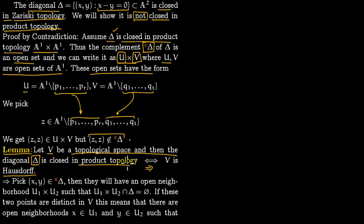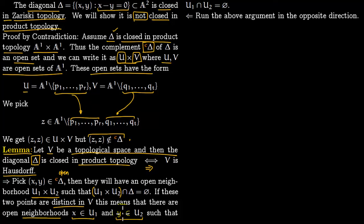Let us prove the lemma in the forward direction. We start with V as a topological space and assume the diagonal is closed. We pick a point (x, y) in the complement of the diagonal — which is open — so we can find open sets U1 times U2 as a neighborhood of this point such that U1 times U2 intersects the diagonal in the empty set. If x and y are distinct in V, this means we can find open neighborhoods x in U1 and y in U2, and we can shrink these sets so that U1 intersection U2 is empty. This is exactly the Hausdorff condition.